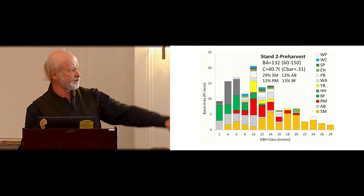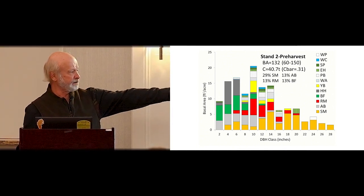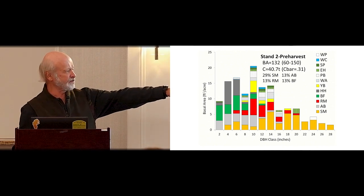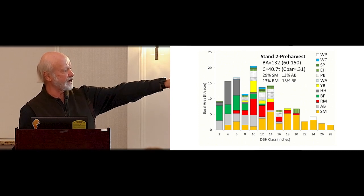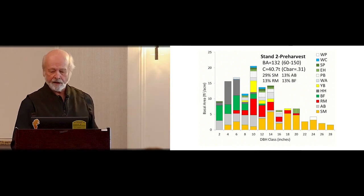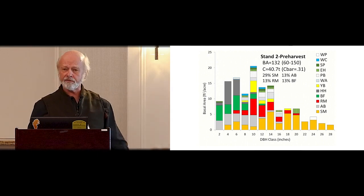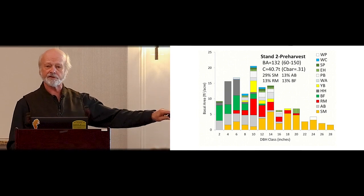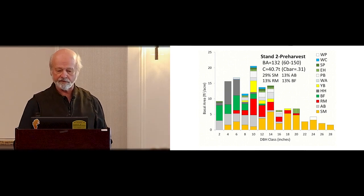The noteworthy thing in the stand structure is all the grayish stocking in the two-to-ten-inch classes — the beech — which clears up to 16 inches. That's what we were mostly going after. And the fir, and some white birch, but very little else. You see that beautiful big old sugar maple — that's just legacy material. This stand is really special for that reason, and we didn't touch it and have no intention of doing so.